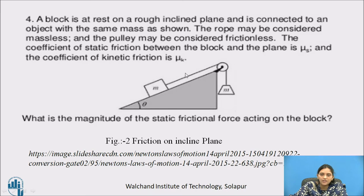Now pause the video and solve this question. A block is at rest on a rough inclined plane and is connected to an object with the same mass as shown in the figure. The rope may be considered massless and the pulley frictionless. The coefficient of static friction between the block and the plane is mu s. What is the magnitude of static friction force on the block?